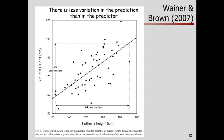Our predictions are not as extreme — they are restricted, tugged in more towards the middle. For really tall fathers, we'll predict the kids pretty tall but not as tall, pulling the prediction back toward the middle. For really short fathers, we predict the kids fairly short but not as short, pulling them up a bit toward the middle. This phenomenon — that our predictions from regression are not as extreme and are tugged toward the middle — is the phenomenon of regression to the mean.